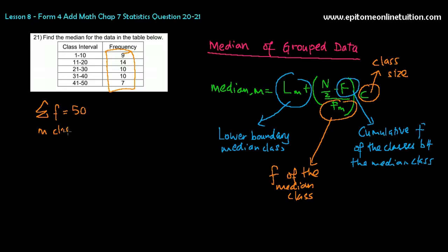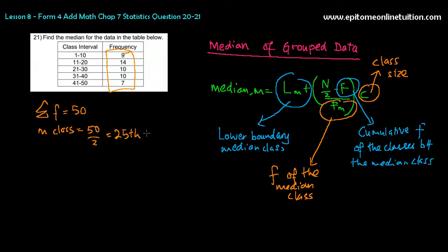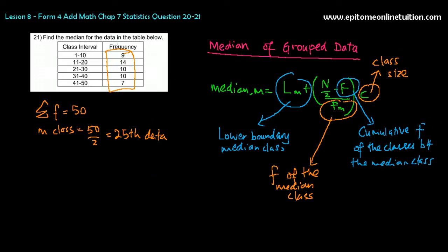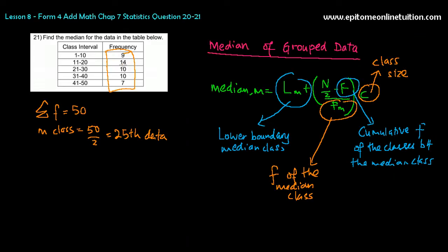So, median class would equal to 50 divided by 2, so that would be the 25th data. The 25th data. So, the 25th data is where? So, let's look at the cumulative frequency. That's 9 plus 14, 23. So, 25th not yet.